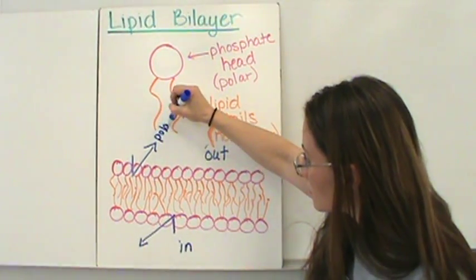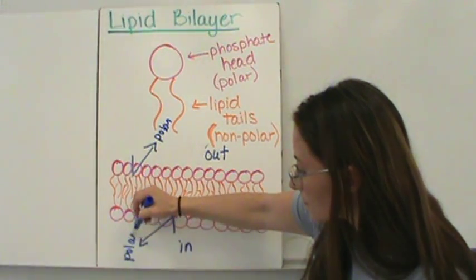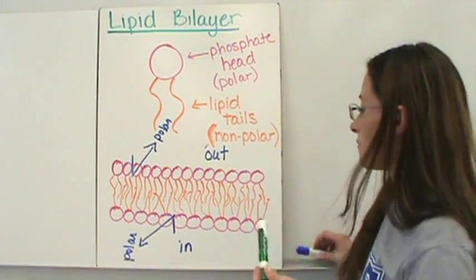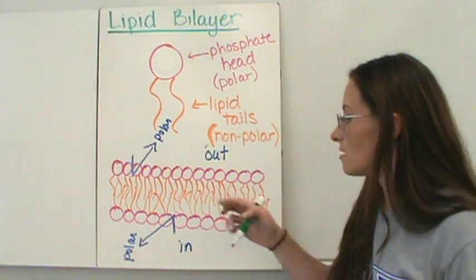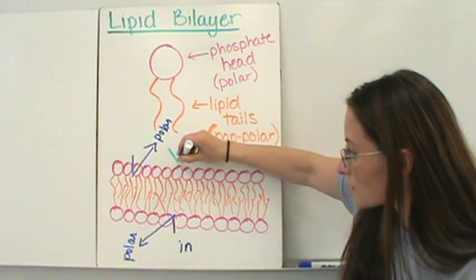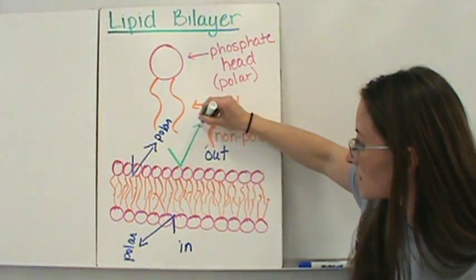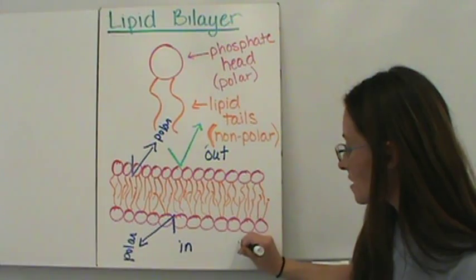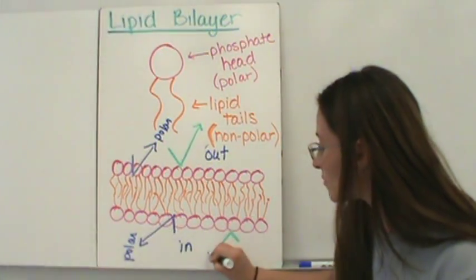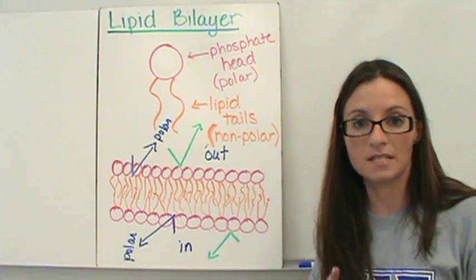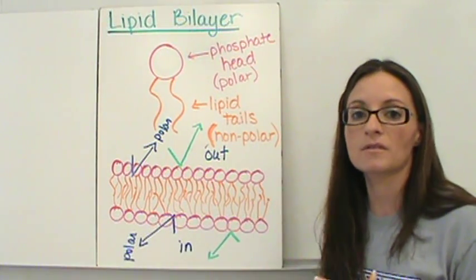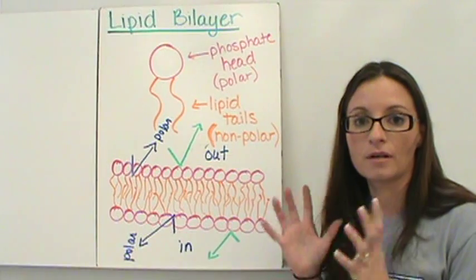Non-polar molecules don't like water, so what's going to happen is even before they reach the inner layer, they're going to bounce off the outer polar head layer and stay on the outside of the cell. Similarly, if a non-polar molecule is trying to get out, it's going to reach the polar area and be bounced off, not allowing it to exit the cell. So the lipid bilayer is an extreme protection layer — pretty much nothing can get through your lipid bilayer.